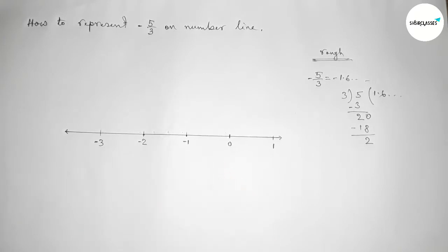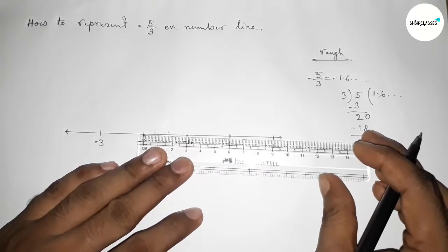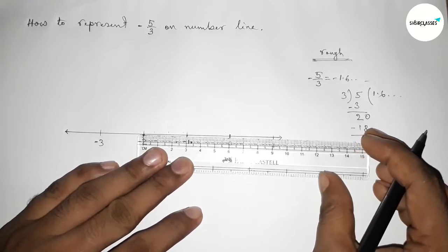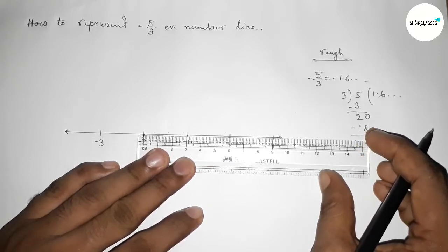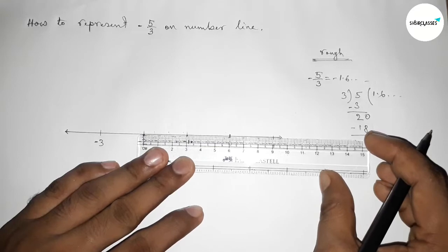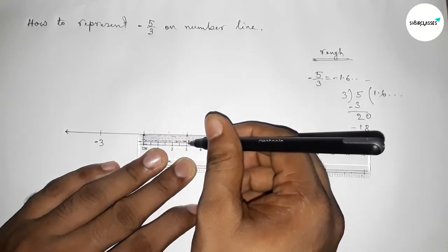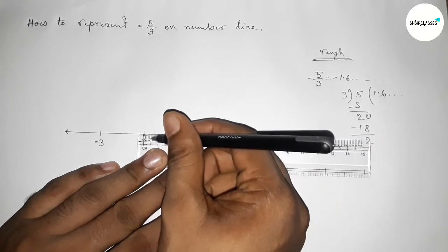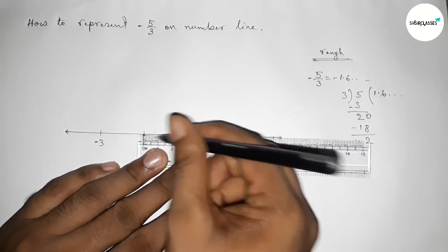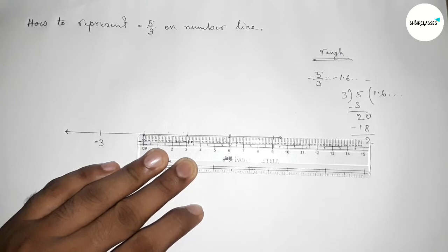So the value of minus five by three will be between minus one and minus two. We have to divide the length between minus one and minus two into three equal parts approximately. Using the scale, the total length between minus one and minus two equals 30 millimeters because the length is three centimeters.